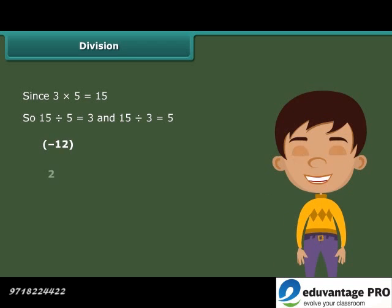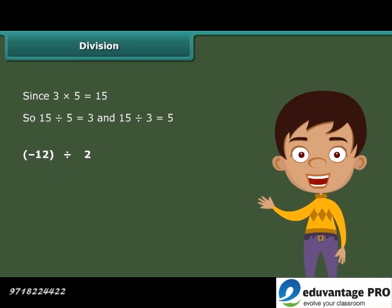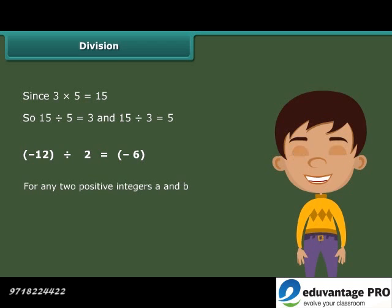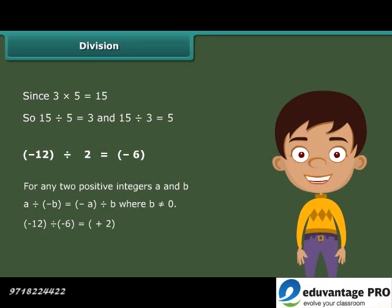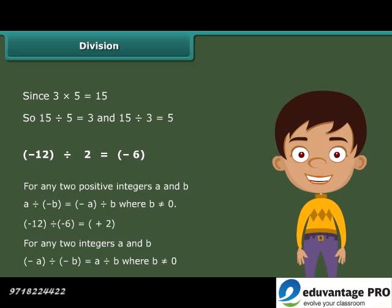When we divide a negative integer by a positive integer, we divide them as whole numbers, and then put a minus sign before the quotient. Thus, we get a negative integer. In general, for any two positive integers A and B, A divided by minus B is equal to minus A divided by B, where B is not equal to 0. When we divide a negative integer by a negative integer, we first divide them as whole numbers and then put a positive sign. In general, for any two integers A and B, minus A divided by minus B is equal to A divided by B, where B is not equal to 0.